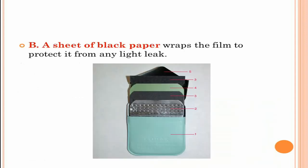Next is a sheet of black paper. The function of this black paper is to protect the film from any light leakage.